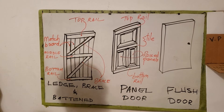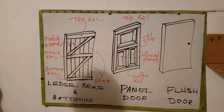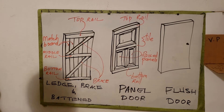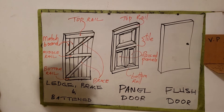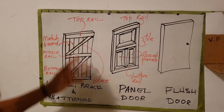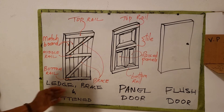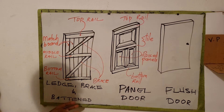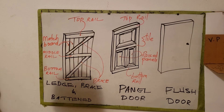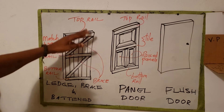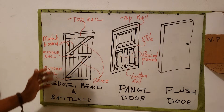Welcome back. In this video I'll be showing you how to sketch three common types of door. This section typically comes in the sketch and design part of your CSEC exam. For you to be able to sketch these - the ledge, brace and batten - you would need to know exactly what it looks like and also the different parts of it.